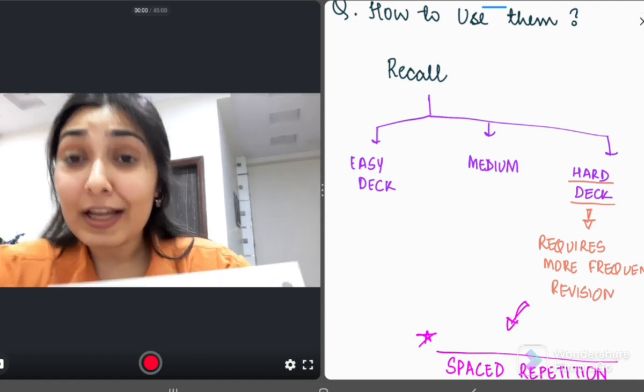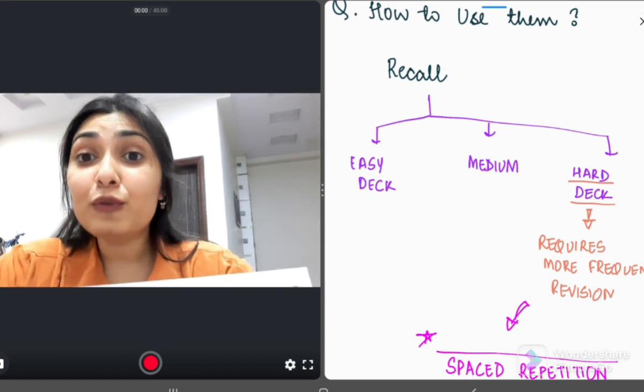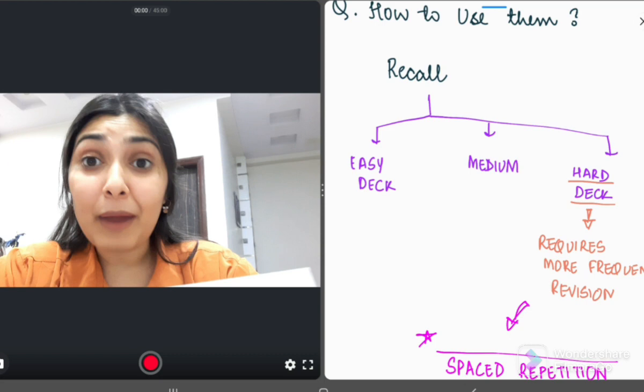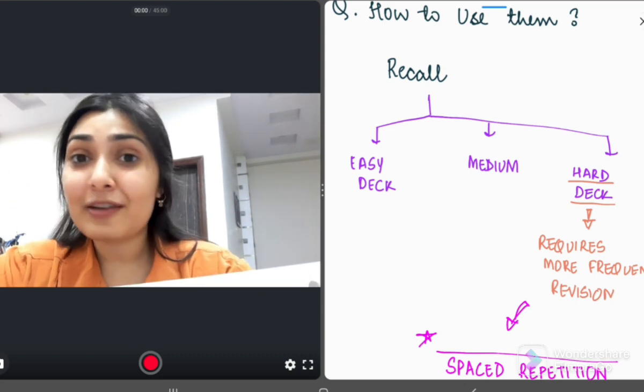This study technique is spaced repetition. Repeating all the facts that you feel you are not confident in, this is spaced repetition. So, combining active recall with spaced repetition, it is a double-double power.